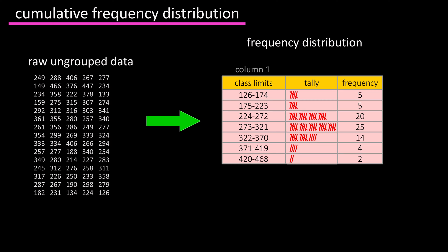You break the data down into classes or intervals, column one. You tally up how many data points are in each class, column two, and you write that number down, which is the frequency in column three.